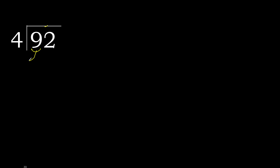92 divided by 4. 9 is not less, therefore we work with 9. 4 multiplied by which number is nearest to 9 but not greater? 4 multiplied by 3 is 12, which is greater. 4 multiplied by 2 is 8, which is not greater — ok.